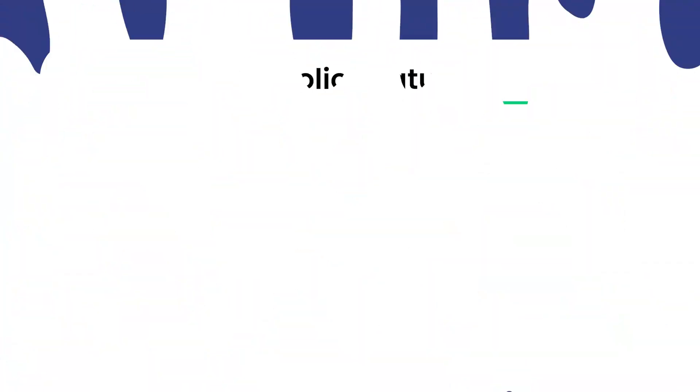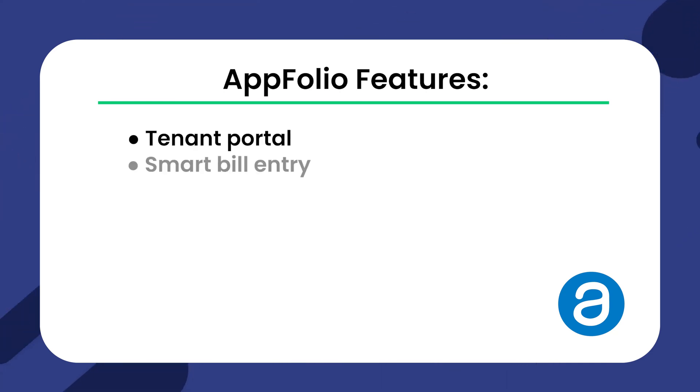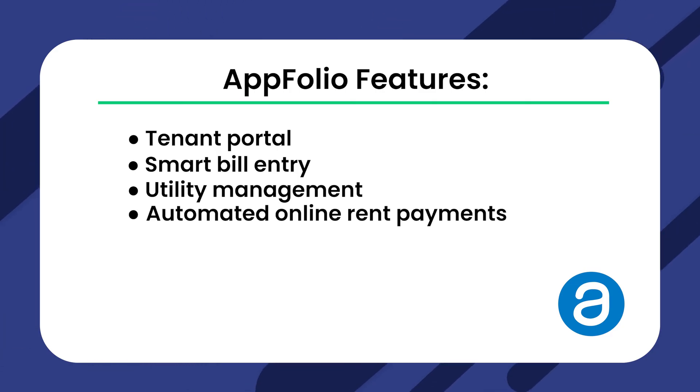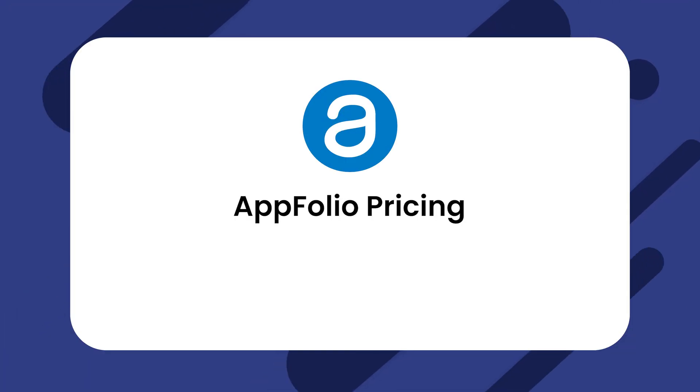Appfolio is another robust option for residential property and lease management. Despite Appfolio's expansive features, the software's UI remains generally easy to use. Appfolio features include a tenant portal, smart bill entry, utility management, automated online rent payments, and security deposit account holding. Designed for small to mid-sized portfolios, Appfolio starts at $1.40 per unit per month. However, it has an additional minimum monthly fee of $280. Additionally, the basic version of Appfolio requires a minimum portfolio size of at least 50 units.